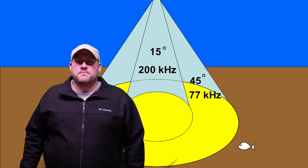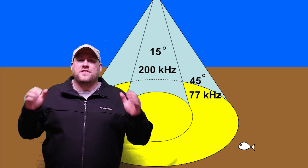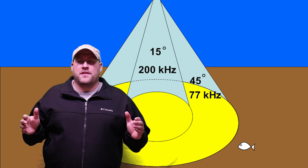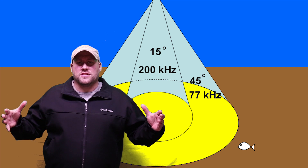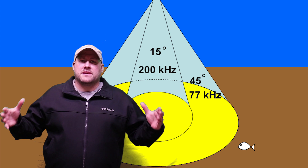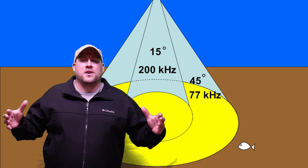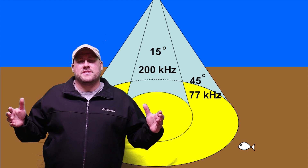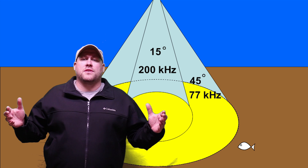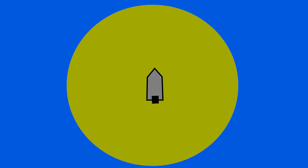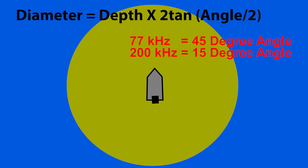Now I'm going to show you how to do the math to figure out exactly how big of an area your sonar is actually looking at underneath the boat, based on the frequency of your transducer whether it be 77k hertz or 200k hertz. The formula for figuring out the diameter of your sonar's coverage is: water depth times 2 tangent, multiplied by the transducer cone angle divided by 2.